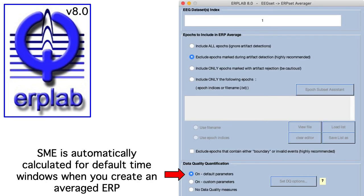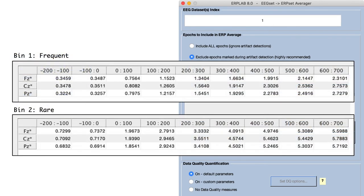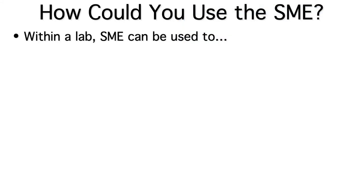To make the SME easy for people to use, we've added it into ErpLab Toolbox. When you use ErpLab to make an average ERP waveform, the SME is automatically calculated for a set of default time windows. After you average, ErpLab will give you an SME value for each time window at each electrode site in each condition. And you can easily specify a custom time window that reflects the time period you're using in your main analyses.